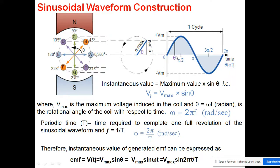The instantaneous value of EMF varies at each point throughout the cycle. That value is given by the formula: v_instantaneous = V_max × sin(θ).